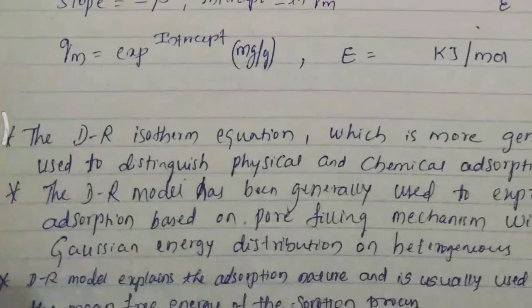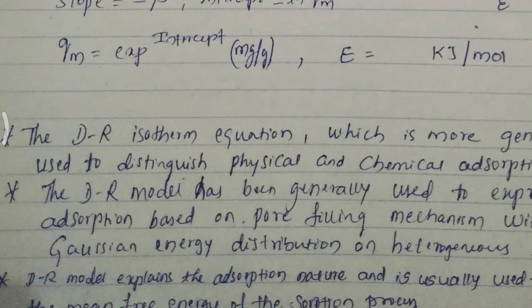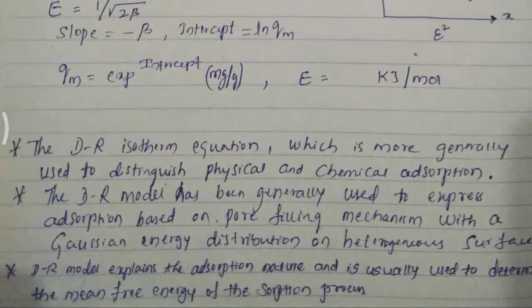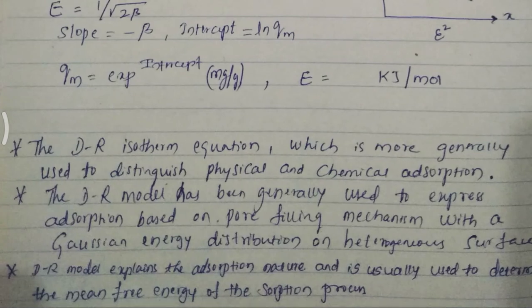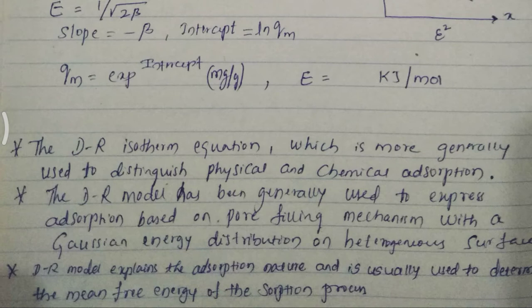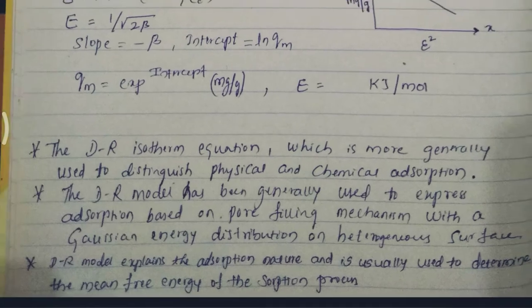DR isotherm equation is more generally used to distinguish physical and chemical absorption. DR model has been generally used to express absorption based on pore filling mechanism with the Gaussian energy distribution on heterogeneous surface.